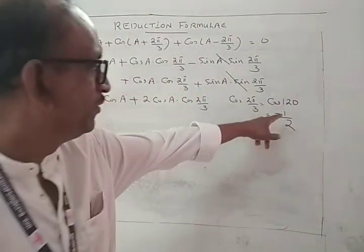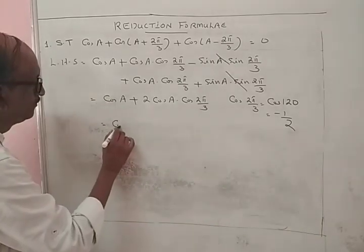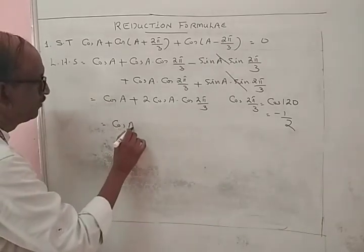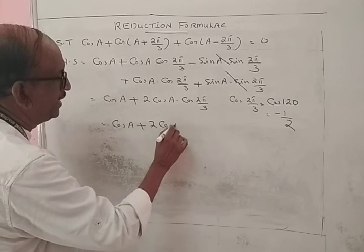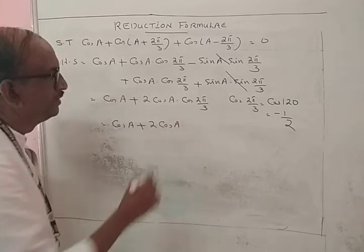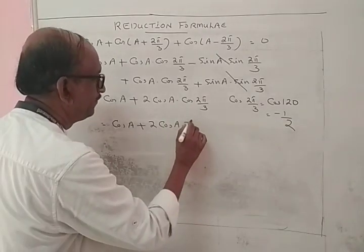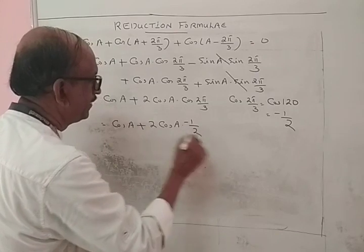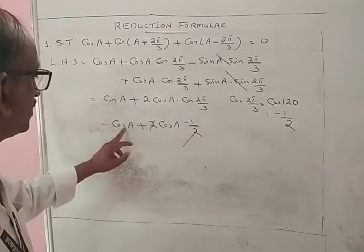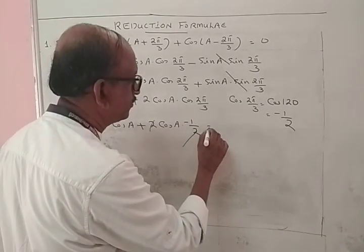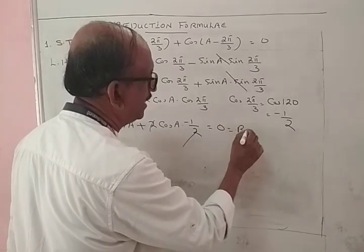This gives cos A plus cos A plus 2 cos A times cos(2π/3), which is minus 1/2. The 2s cancel, leaving cos A minus cos A, which equals 0. This equals the right hand side.